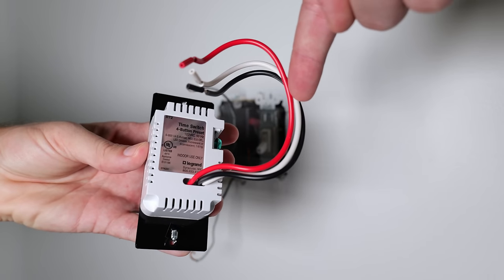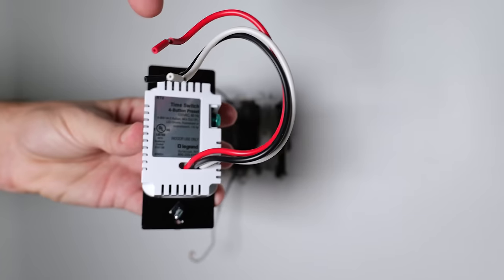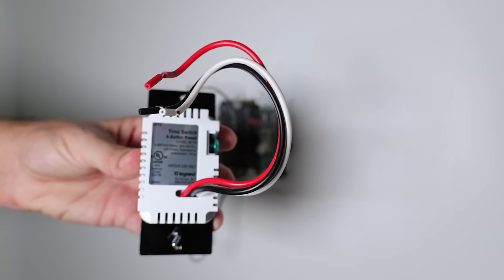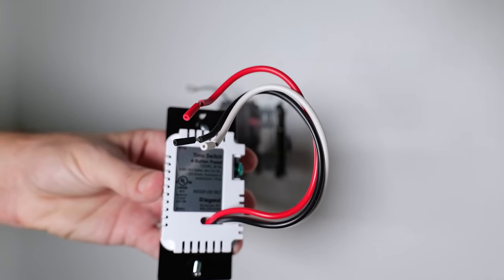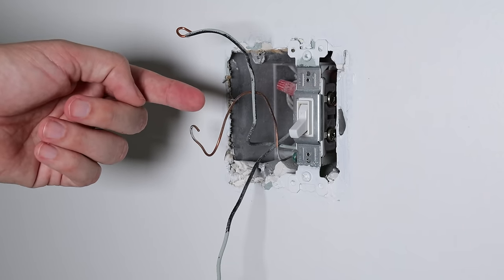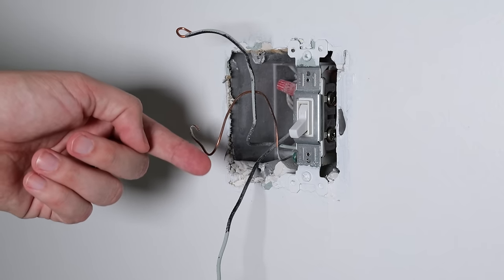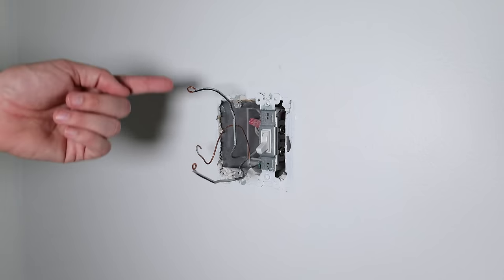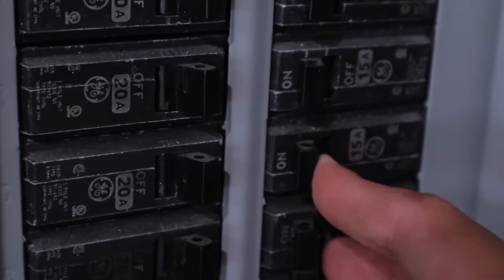On the back here we have a black, a white, and a red wire. Since this switch requires that the line, which is the black, and the load, which is the red, are to be connected to specific wires that are coming out of the wall, I need to figure out which one of these black wires is my line and which one is my load. In order to do that I'm going to turn my circuit breaker back on so I've got power going here.